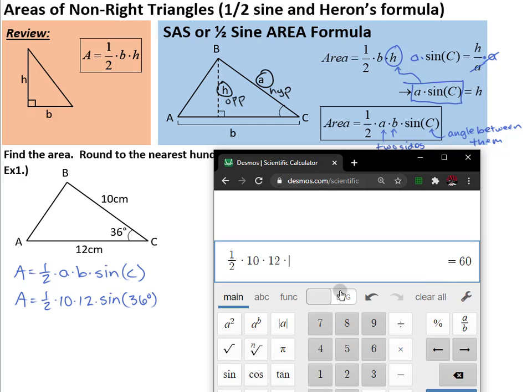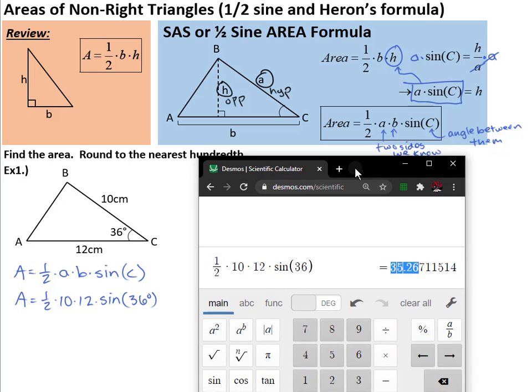10 times 12 times the sine of the angle between them, which, here we go, 36 degrees. Make sure you're in degree mode again in your calculator. And it tells me my area, remember this is area, not a side length, is 35, and it's set to round to the nearest hundredth. So two decimals out means we need to look at the third decimal place, that seven, and round up. In this case, that third digit is five or bigger, we round up. So 35.27 centimeters squared.